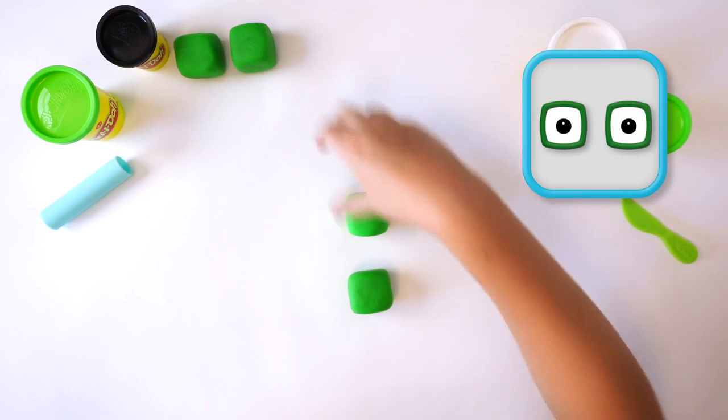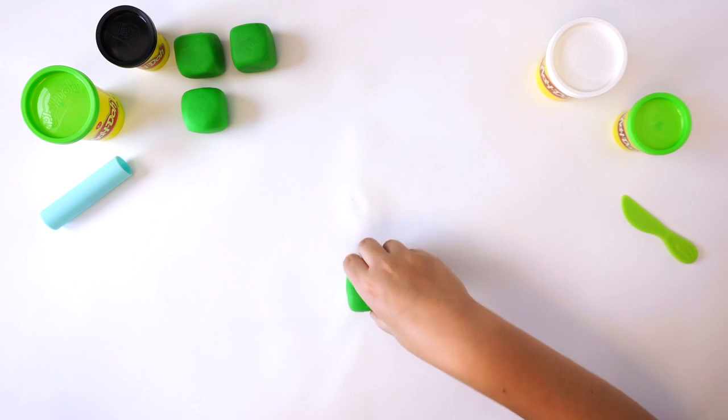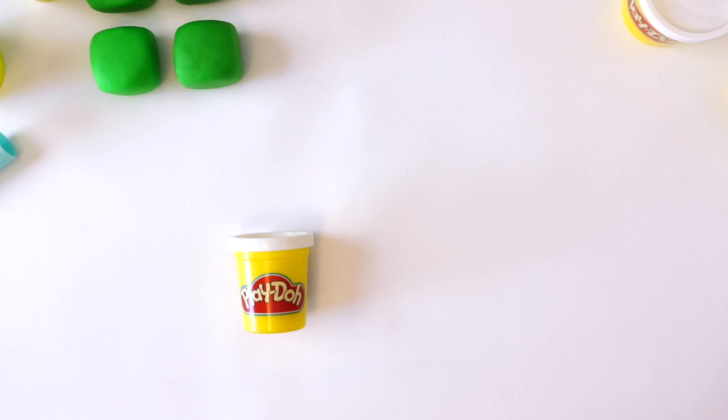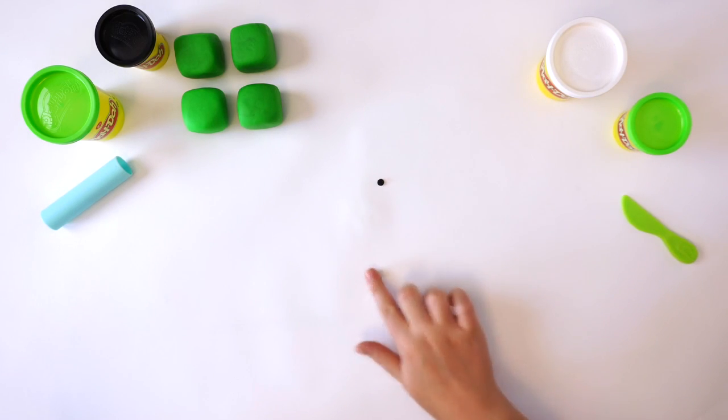Next, we need two eyes. The eyes are made up of two different colors, white and black. Roll a small ball of white Play-Doh compound.